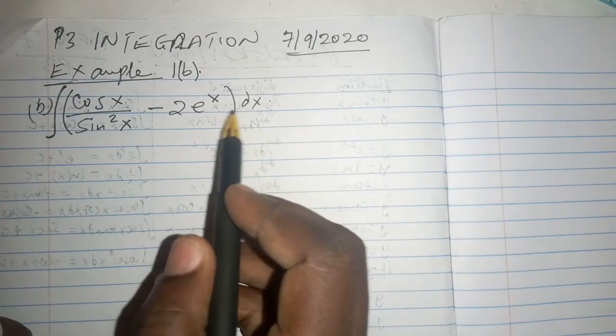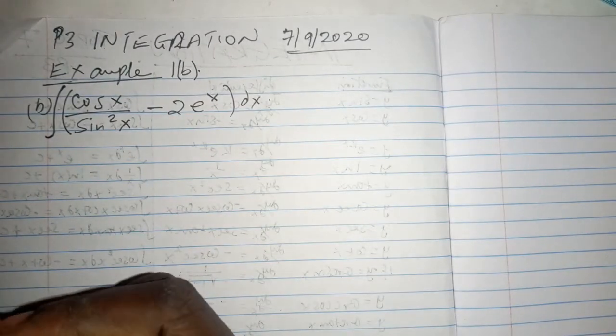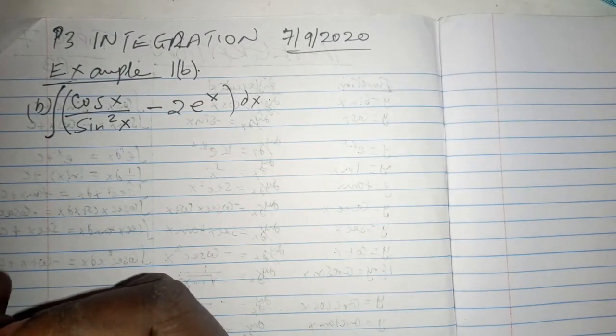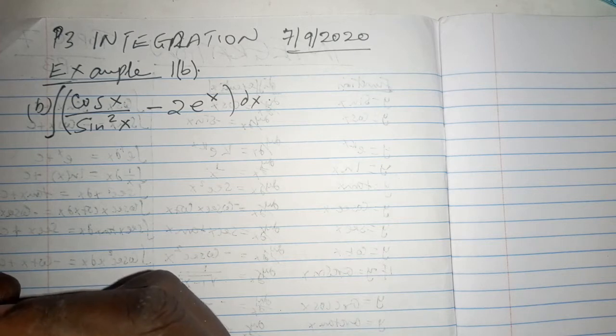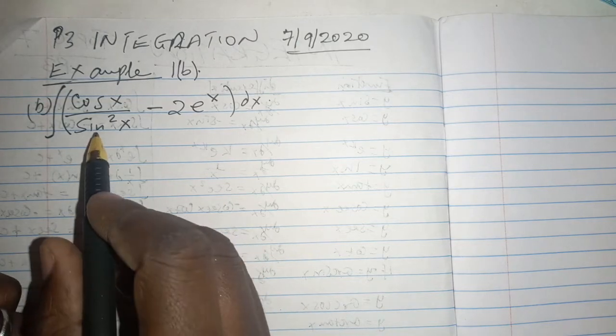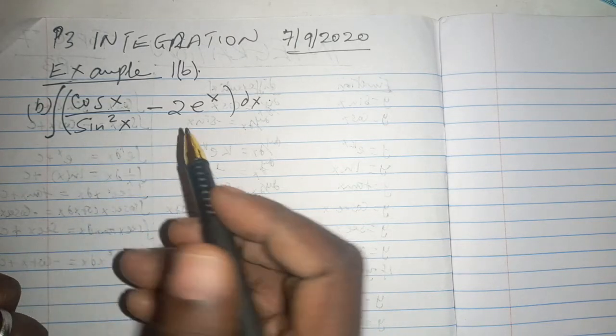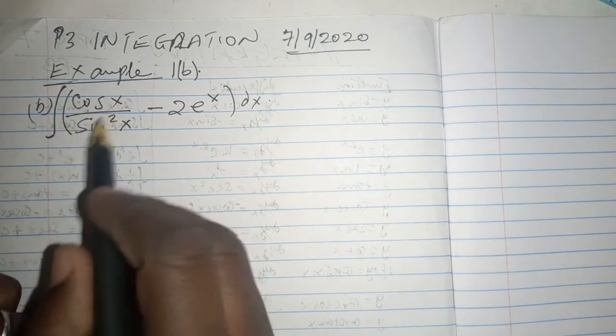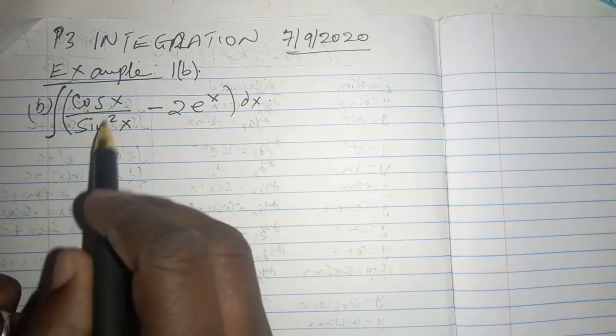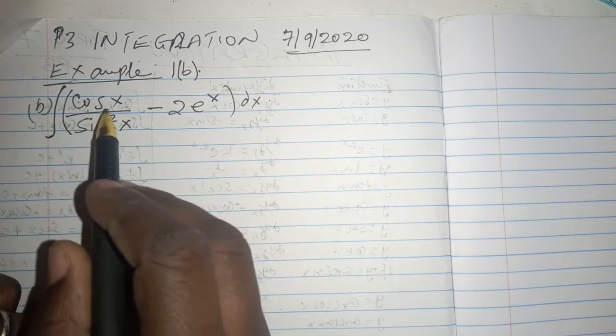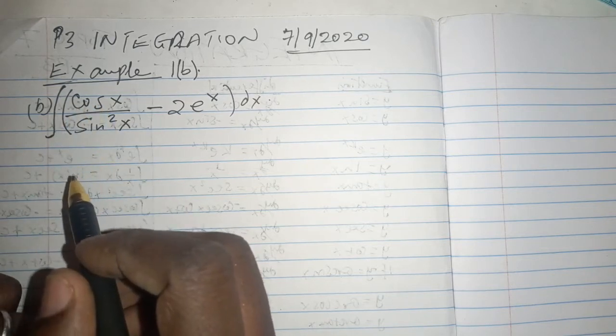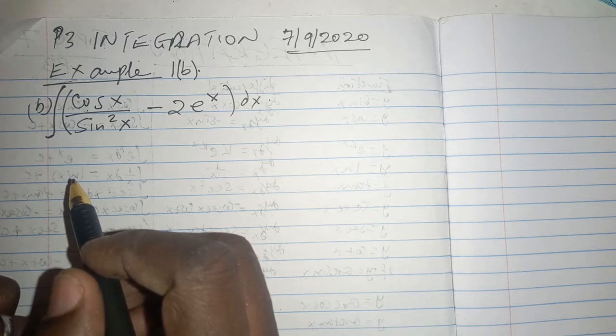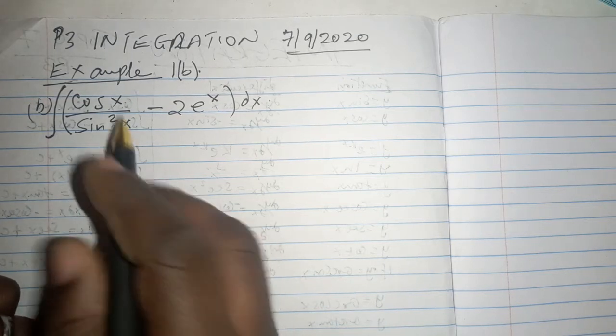One thing we note in this function or expression is that we have a sine squared at the denominator and it is difficult to get a trigonometric ratio or relationship or a trigonometric identity that is explained by cosine x over sine squared x.